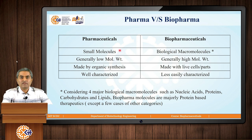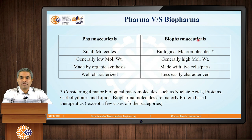When we consider pharmaceutical substances, they are generally low molecular weight small molecules. They are made by organic synthesis and they are very well characterized. But when we talk about biopharmaceuticals, they are generally high molecular weight biological macromolecules made with living cells or parts thereof, and they are less easily characterized.